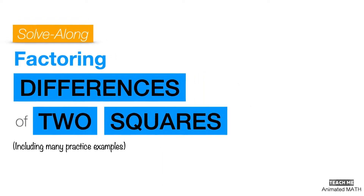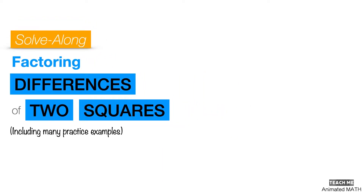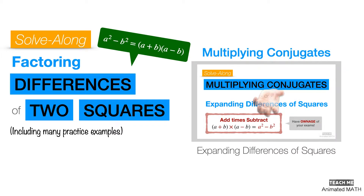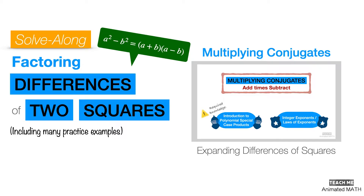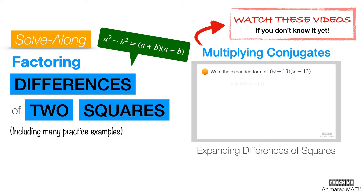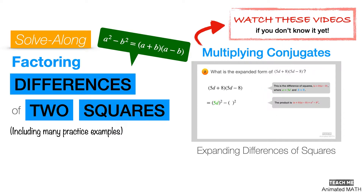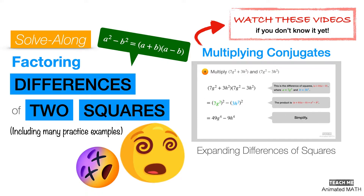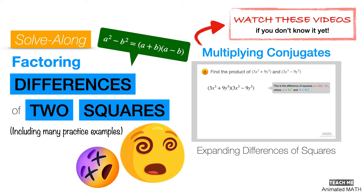The techniques used for factoring polynomials are pretty varied, and one of the methods you can use is the difference of two squares formula. If you have no clue how to expand the add-time-subtract pattern for polynomial multiplication, or you haven't seen our video of it yet, then be sure to click the i button — because without that knowledge, I can guarantee you'll be making some very confused facial expressions watching any video about factoring differences of two squares.